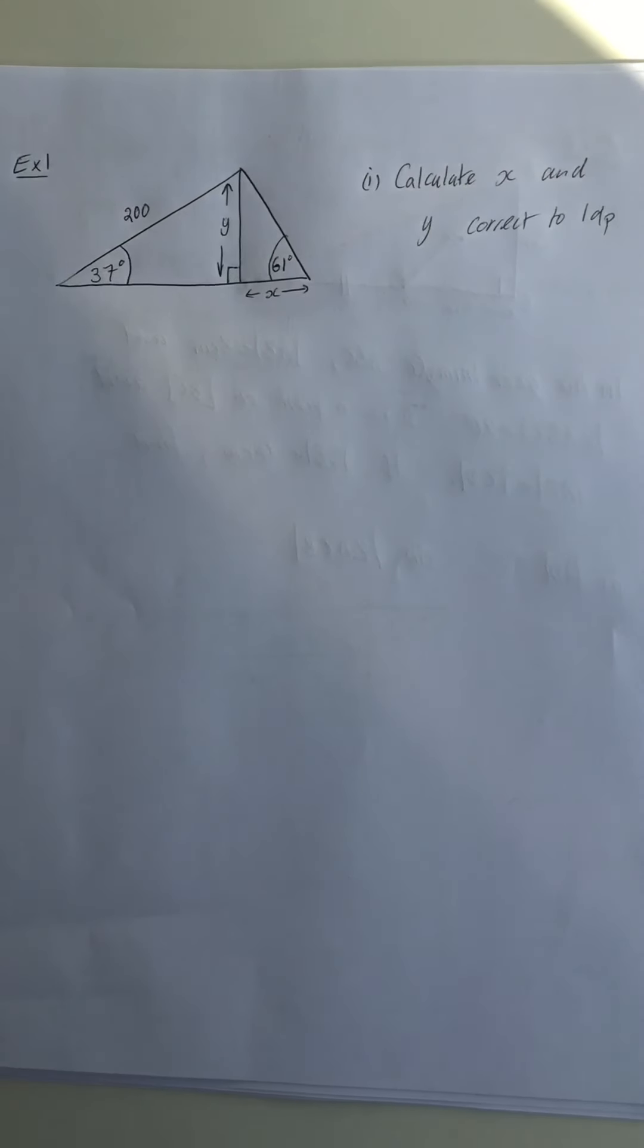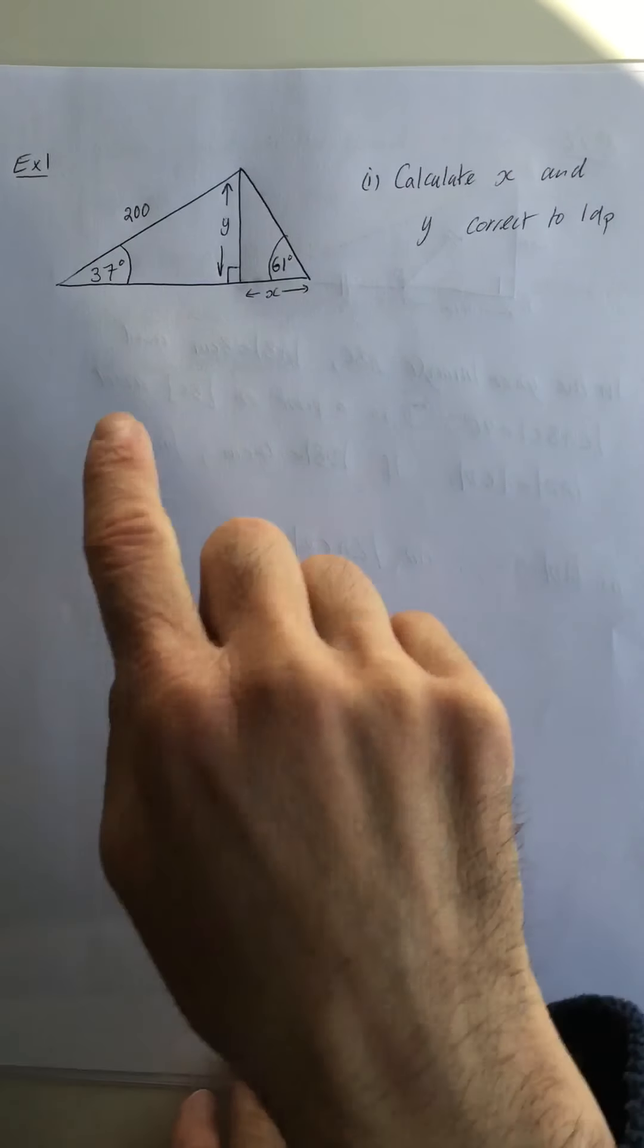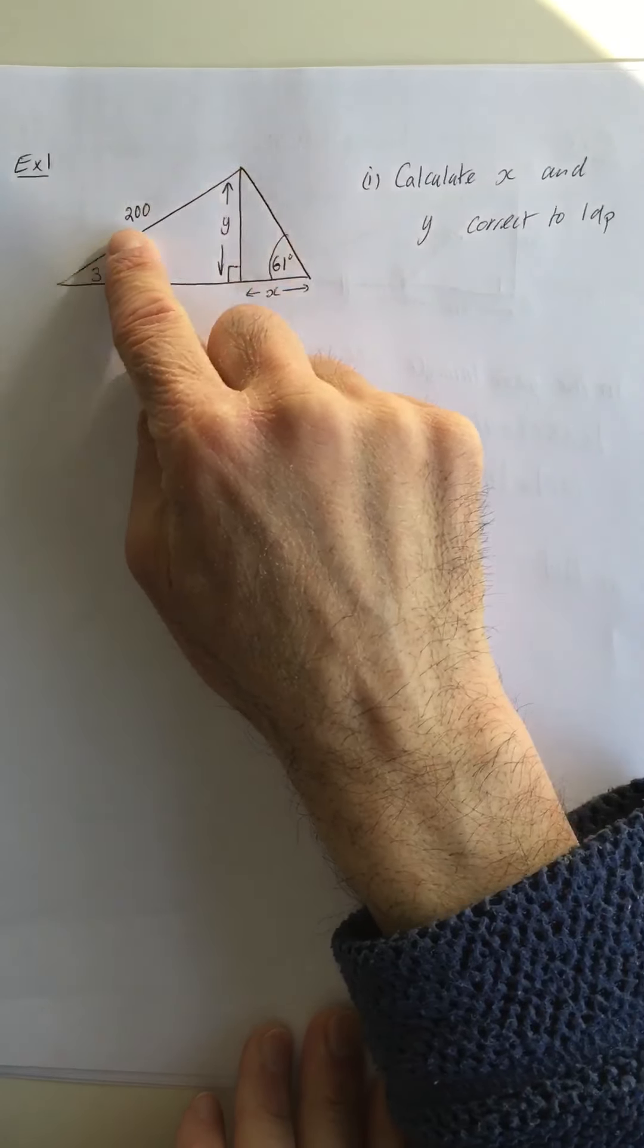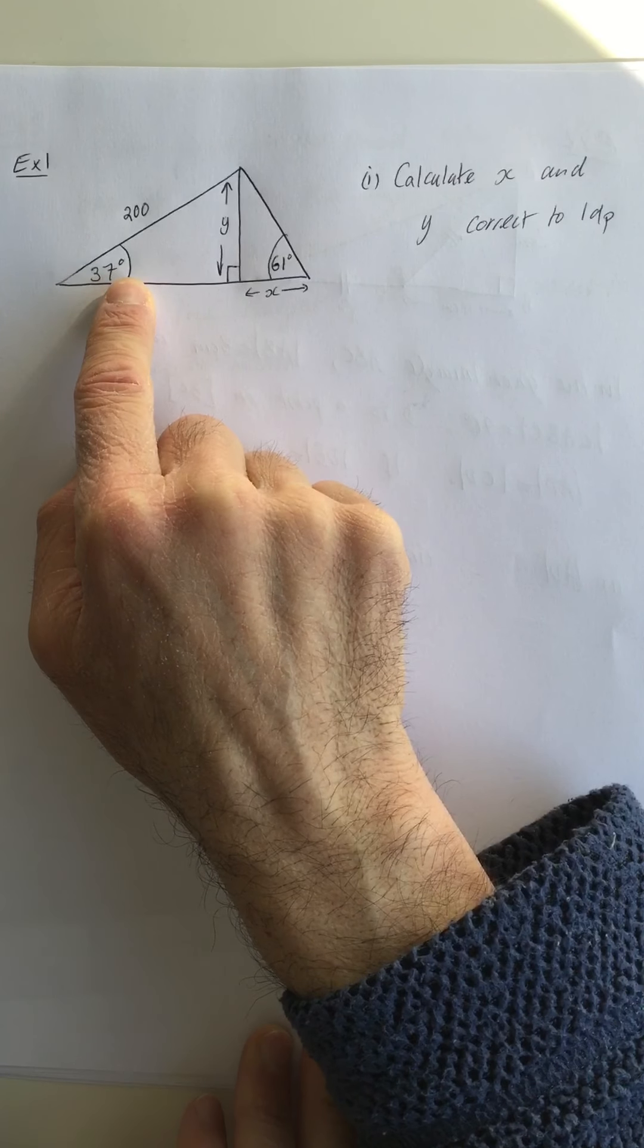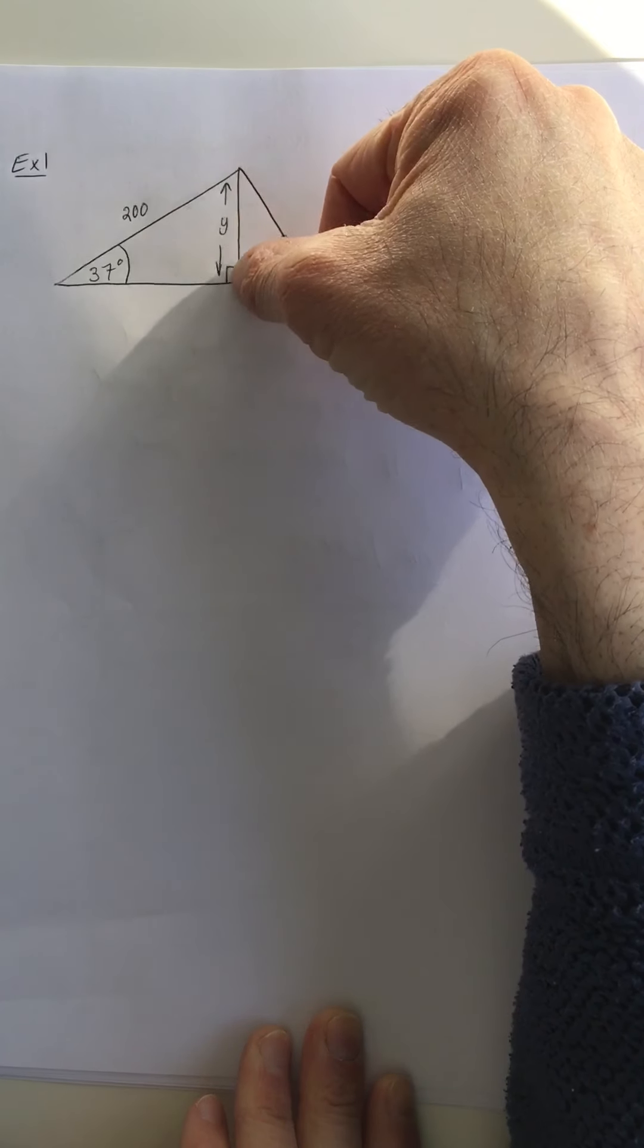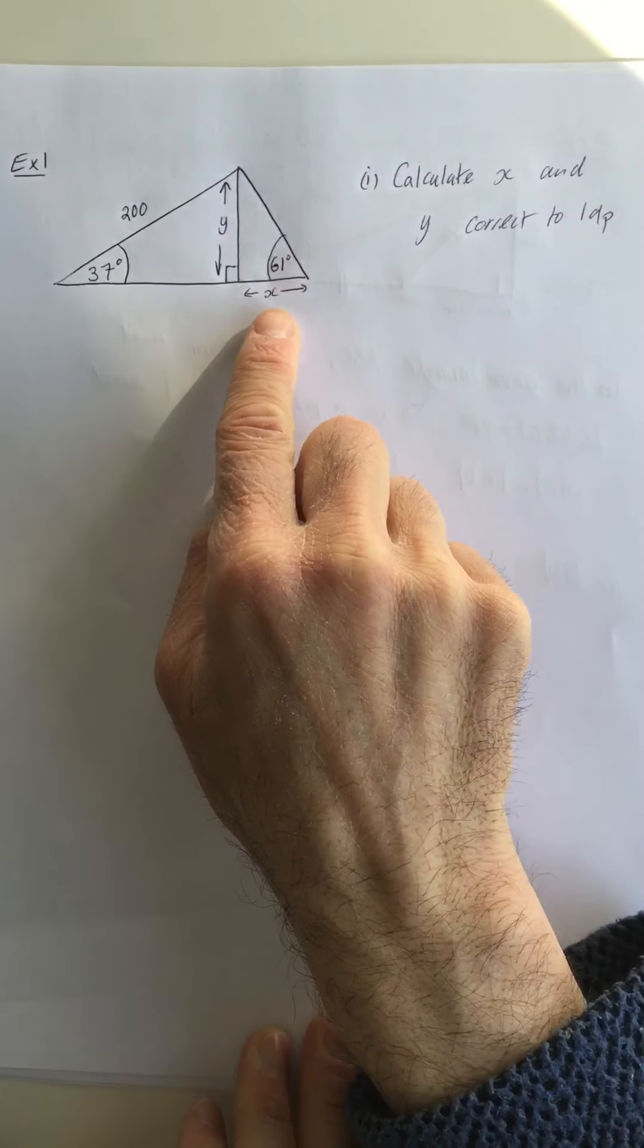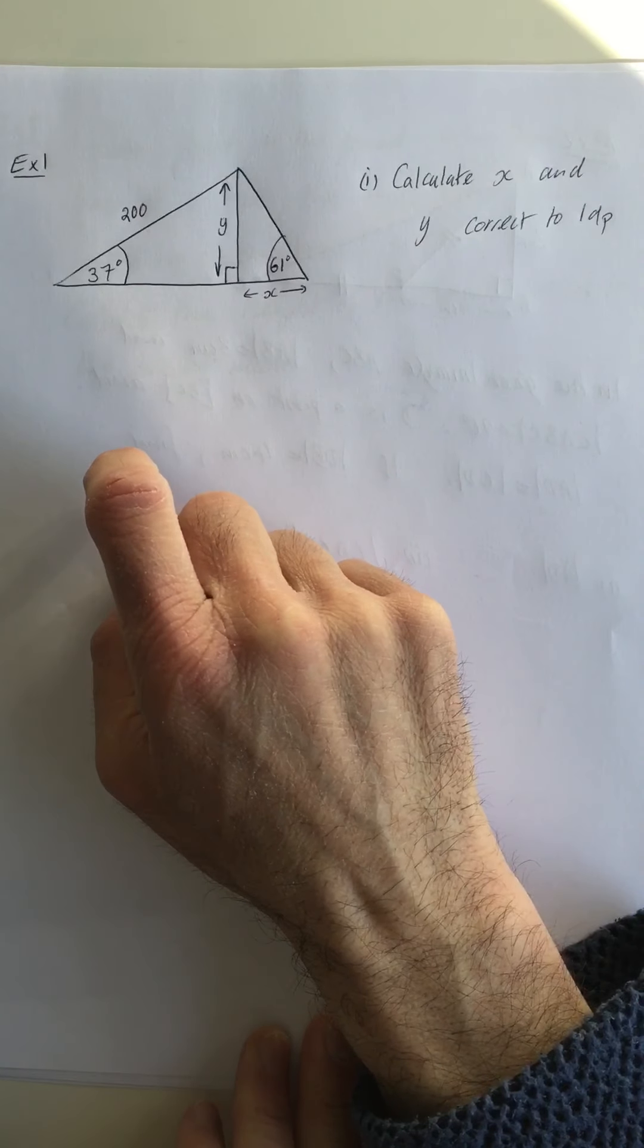Okay, here I'm going to do a few examples of how to solve problems using trigonometry. Example one: we have a triangle as shown with a smaller triangle drawn inside it. Notice that this side here is 200 long, and it's got an angle of 37 degrees here, an angle of 61 over here, and they have a mystery height called y and a mystery distance here called x. Our job in this example is to calculate x and y correct to one decimal place.